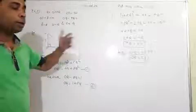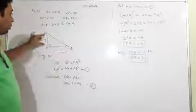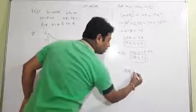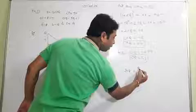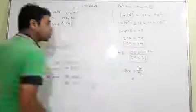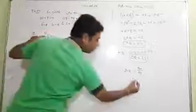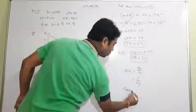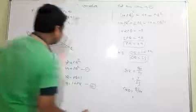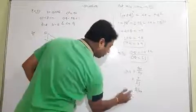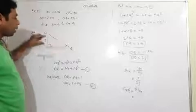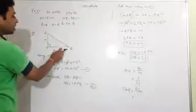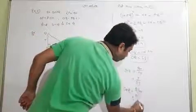So OQ is equal to 25. All three sides are now found: PQ is 24 and OQ is 25, and we already have OP equal to 7. Now we find sine Q and cos Q. Sine Q equals perpendicular upon hypotenuse. The front of Q is the perpendicular which is 7, and hypotenuse is OQ which is 25. For cos Q, base upon hypotenuse: base is PQ meaning 24, upon 25. This is the answer.